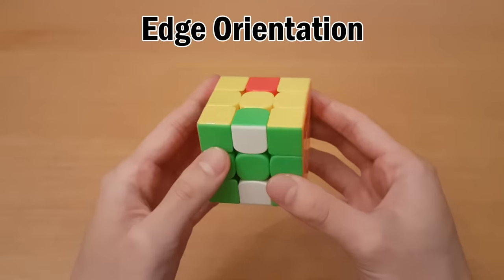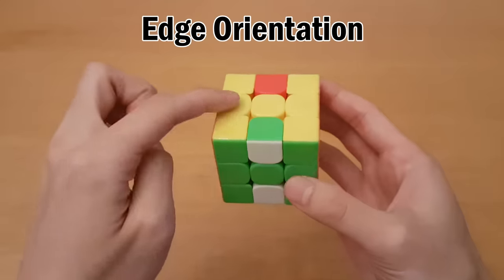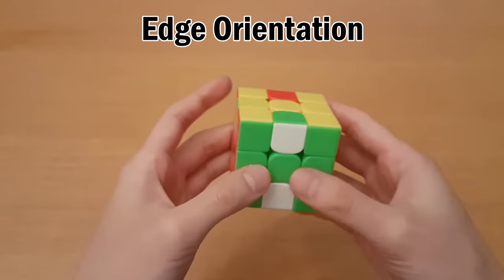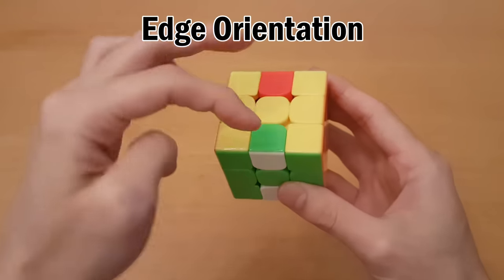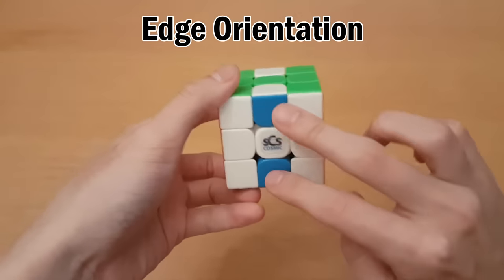Next what we do is orient all of the edges. So there are six possible edges, four in the top layer and two in the bottom. An oriented edge is white or yellow on top or bottom. So these two are oriented, these two are not, and these two are not.